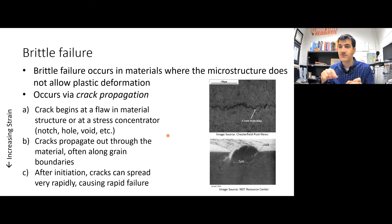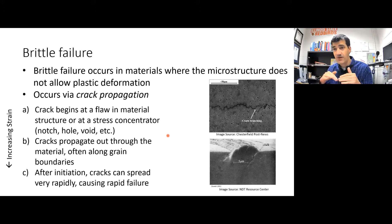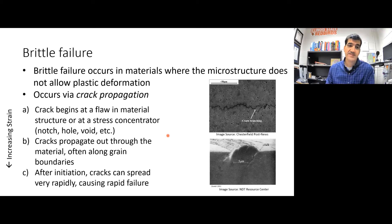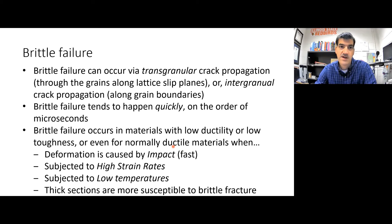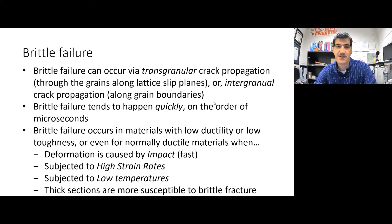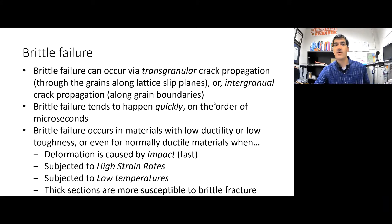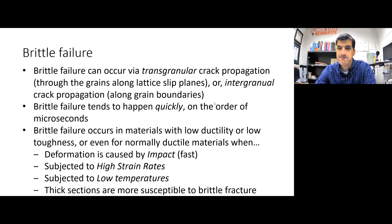As you apply increasing stress, the crack propagates and radiates out from that initial defect, eventually going all the way through the specimen. This can happen on the order of microseconds — very fast compared to ductile failure. Brittle failure can happen either through the grains, which we call transgranular, or along the grain boundaries, which we call intergranular crack propagation. It can happen either way, though often along grain boundaries.